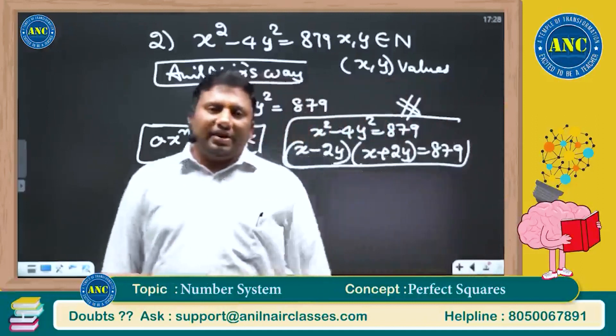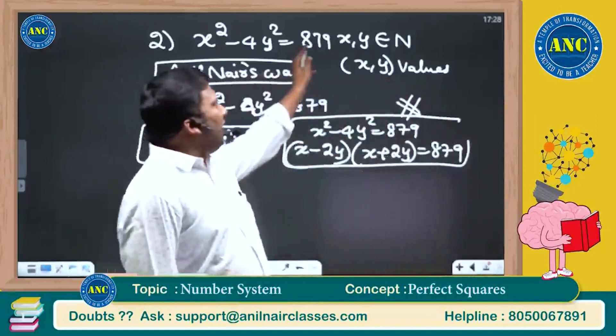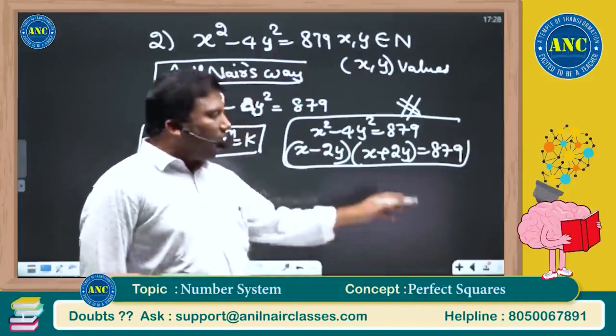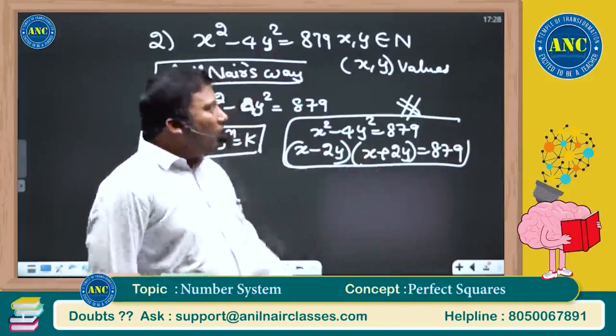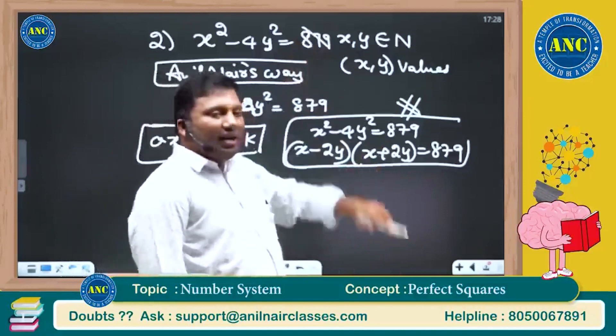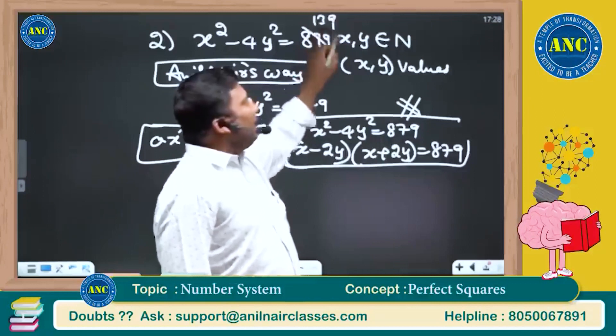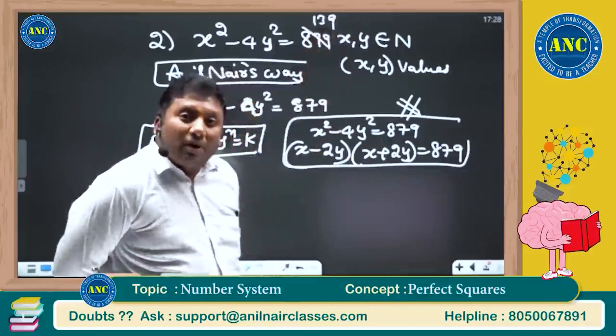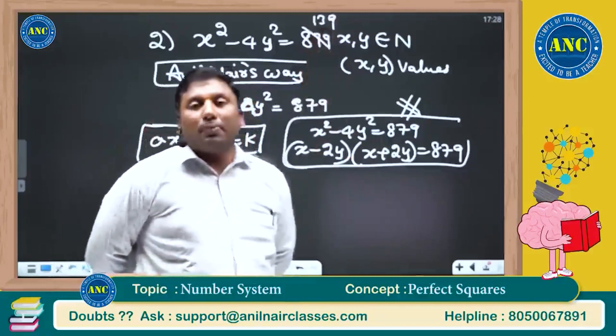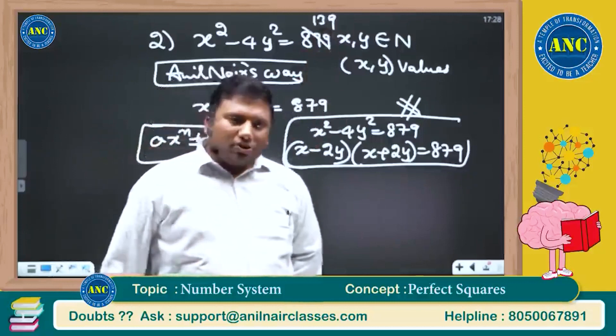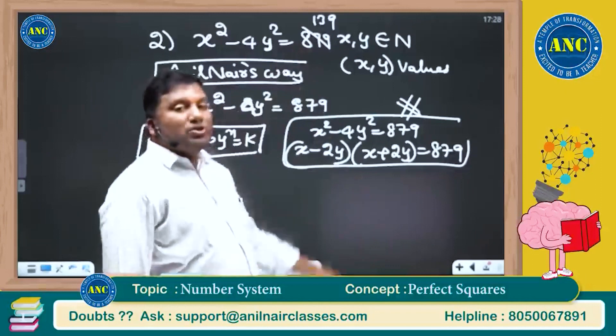You have to check whether 879: 8, 17, 9. 8 plus 7, 15. 15 plus 9, 24. 2 plus 4, 6. You have to factorize 879. What if instead of 879, what if there is some other number, for example 139? What is the sum of the digits? 1 plus 3, 4. 4 plus 9, 13. You have to check whether a number is a prime number or a composite number. Here we got a composite number, so you can take factors.